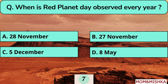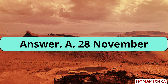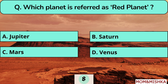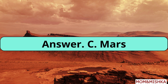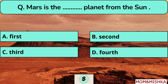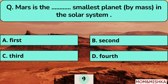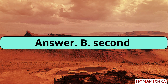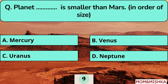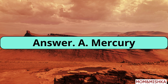Red Planet Day is observed every year on 28th November. Mars is referred to as the Red Planet. Mars is the fourth planet from the Sun, and Mercury is the smallest planet by mass in the solar system — Mercury is smaller than Mars.